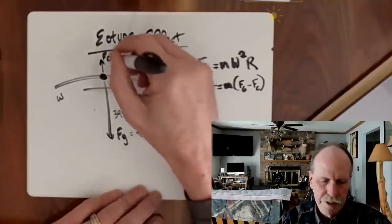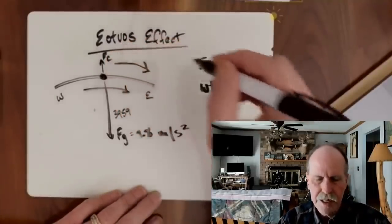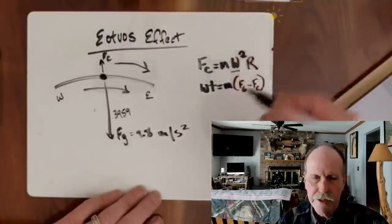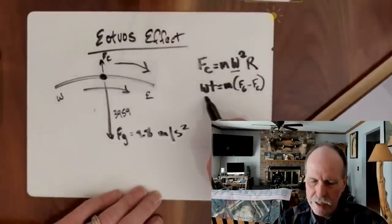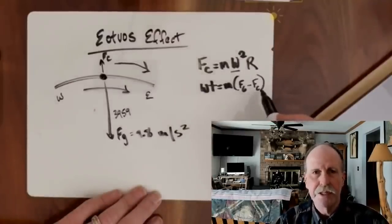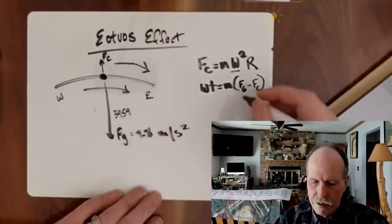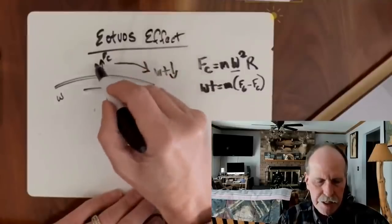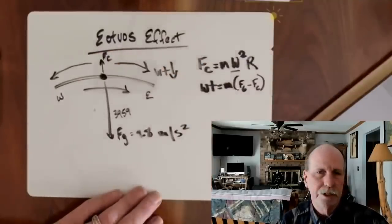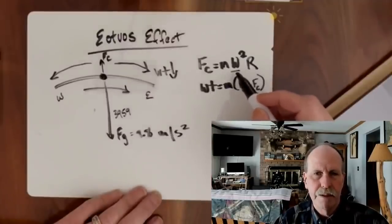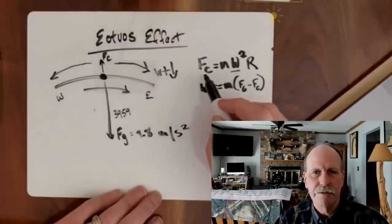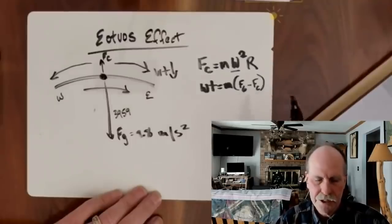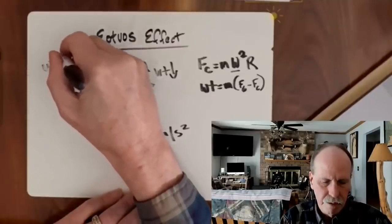What the Eötvös Effect is: if you travel from west to east — with the rotation — the centrifugal force will increase, as you can see right here. You're increasing the rotational speed. And since weight equals mass times gravity minus centrifugal force, your weight will go down. Likewise, if you travel from east to west, you are decreasing the rotational speed and therefore decreasing the centrifugal force. So you are subtracting less centrifugal force from gravity times mass, and your weight will increase.